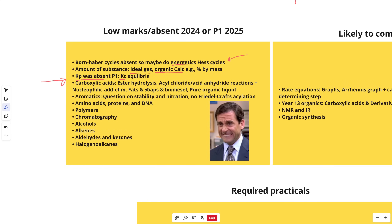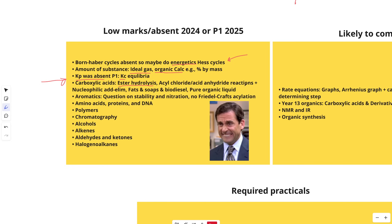Carboxylic acids and derivatives is our next juicy topic. It came up for an absolute ton of marks last year in Paper 2 and Paper 3 combined. But there were a few things that were absent: ester hydrolysis — including basic and acidic hydrolysis — was absent from Paper 2 and 3 in 2024, so brush up on that. Acyl chloride and acid anhydride reactions — the equations, observations, and nucleophilic addition-elimination with acyl chlorides — was also absent last year. Fats, soaps, and biodiesel were absent too; normally not that many marks but you could snag three or four.